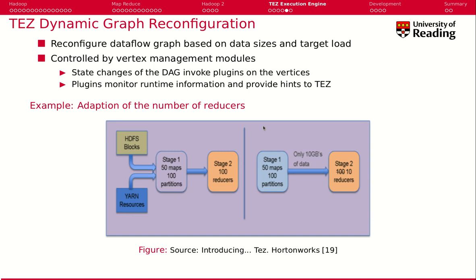This also comes with the dynamic graph configuration. That means on the fly you can find out how many compute processing resources you need and spawn the right number of processors. For instance, we initially start 150 mapping processes and think we may need 100 reducers. But if we find out that the resulting data at this stage is really small, we may need only 10 reducers. This can be changed on the fly during processing.